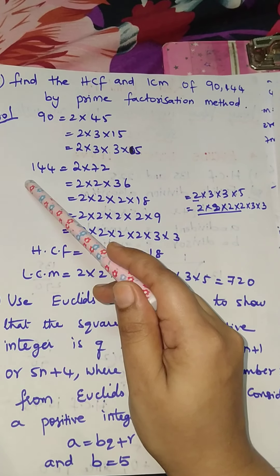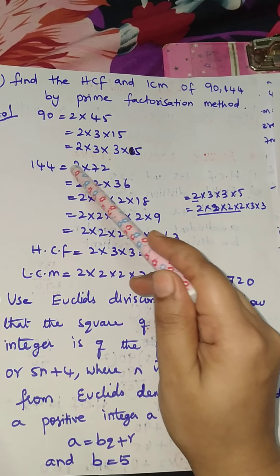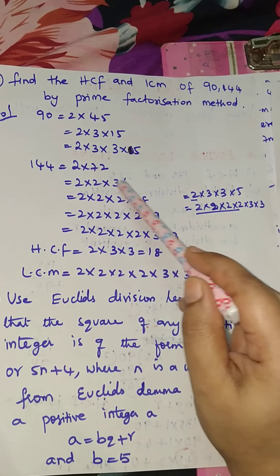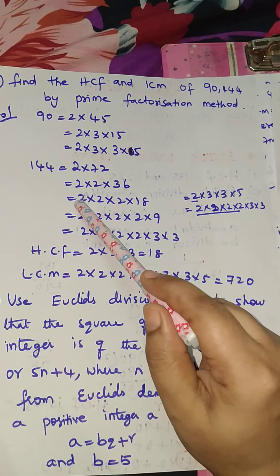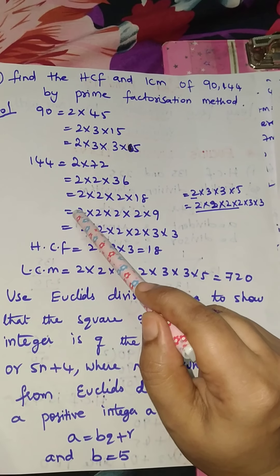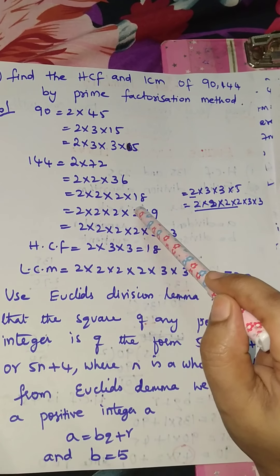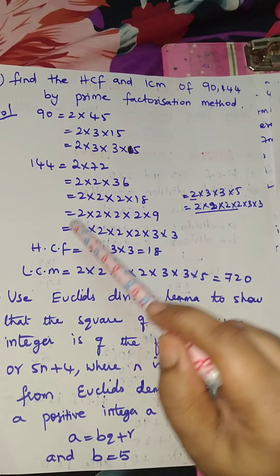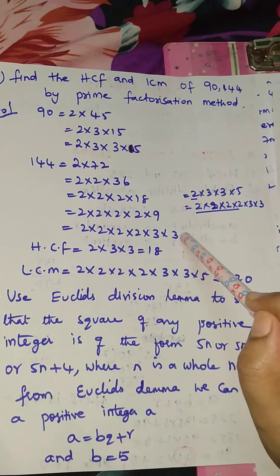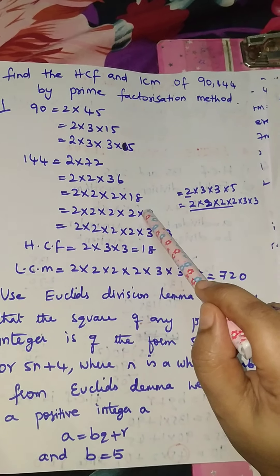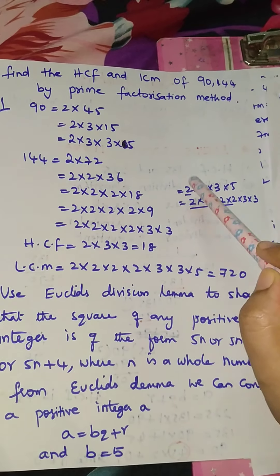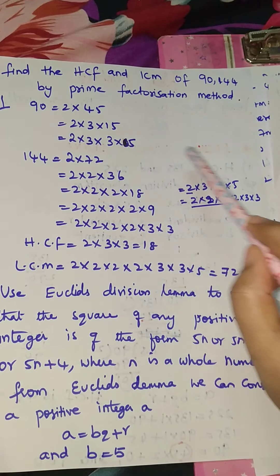Now for 144: 2 into 72, then 2 into 36, then 2 into 18, then 2 into 9, then 3 into 3. So 144 equals 2 into 2 into 2 into 2 into 3 into 3. Now write the final factorizations: 90 = 2 into 3 into 3 into 5, and 144 = 2 into 2 into 2 into 2 into 3 into 3.